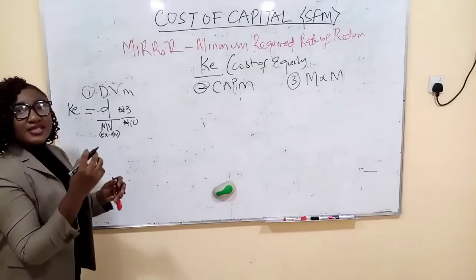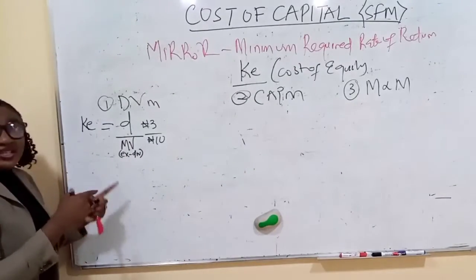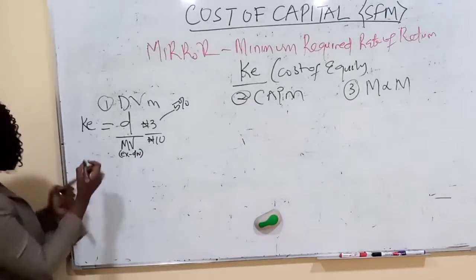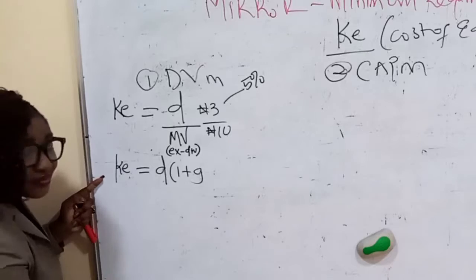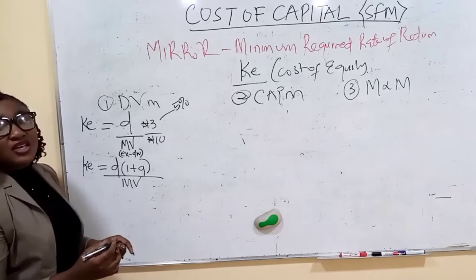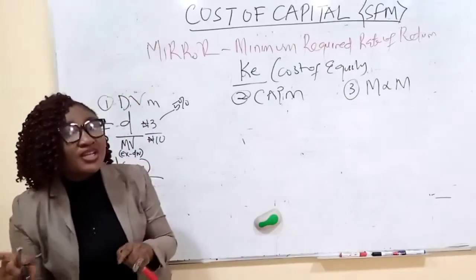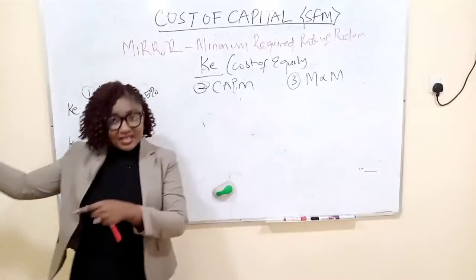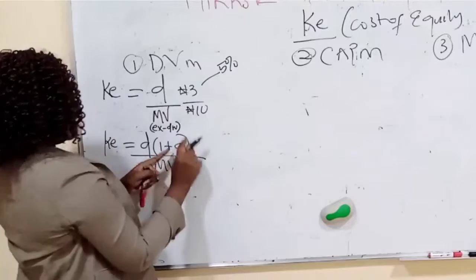There could be a scenario where the dividend is growing at, say, 5%. In that case, the formula changes: cost of equity equals dividend times (1 + g) over market value. In some questions, the growth rate may not be given directly — you have to determine it. They might tell you the last dividend and the current dividend, or how much the company retains, which means you need to calculate the growth rate g.